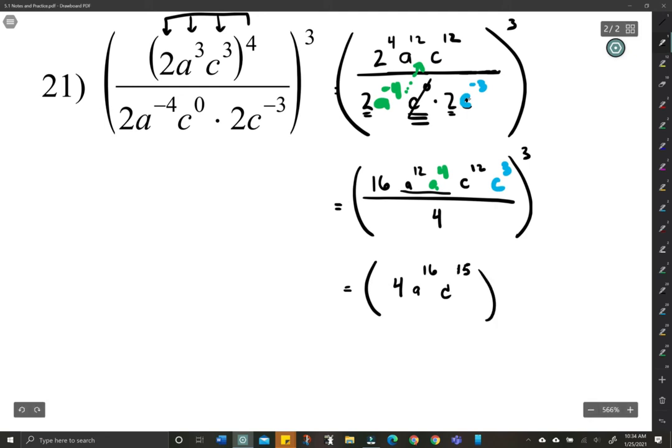And we're going to raise all that to the 3rd. And that means we just multiply and distribute. So 4 to the 3rd. a to the 16 times 3 is 48.